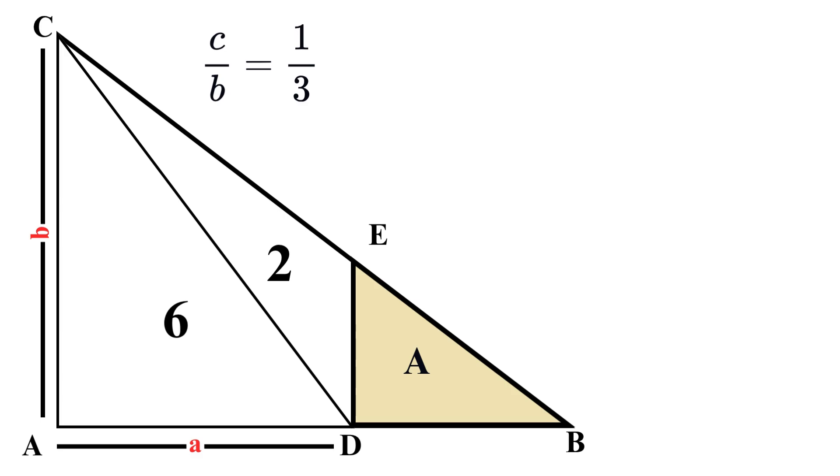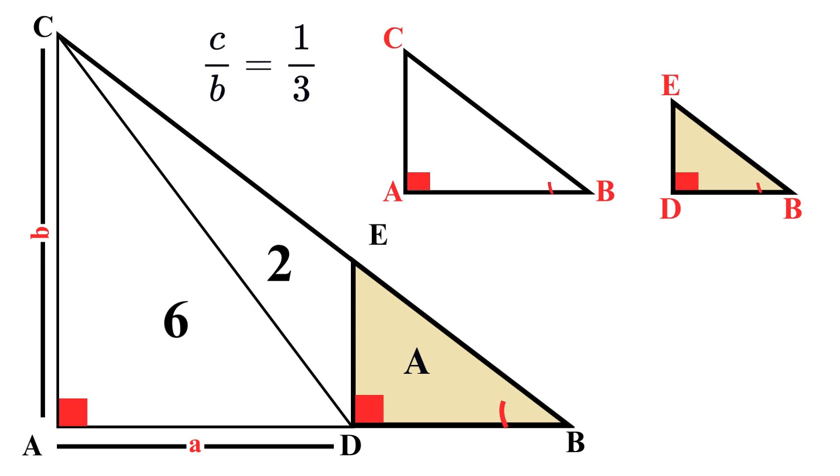We can look at our big triangle ABC, and we can also look at the small triangle DBE. We know that both of these triangles are right triangles. We can also see that both of them share the same angle at point B. So since these two triangles have two congruent angles, this means that those two triangles are similar.